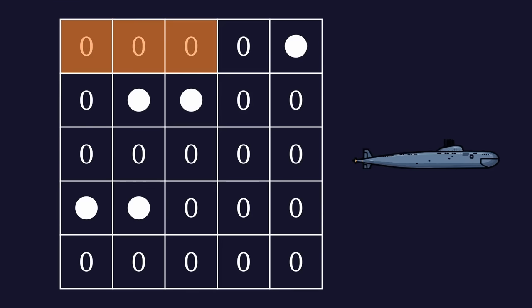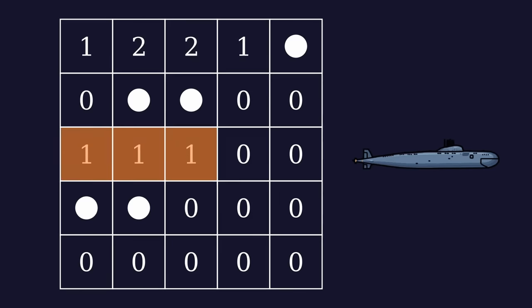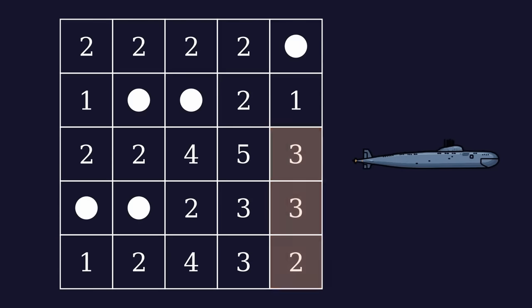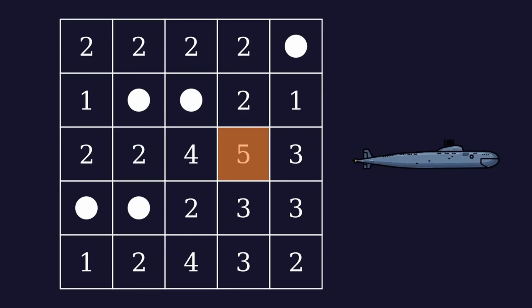We start with every square having a probability count of 0. The submarine can be placed here, so we add 1 to these 3 squares. It can be placed 1 square to the right, so we add 1 to these 3 squares. And we go through every possible position that the submarine can be placed in and add 1 to the squares where it can fit.